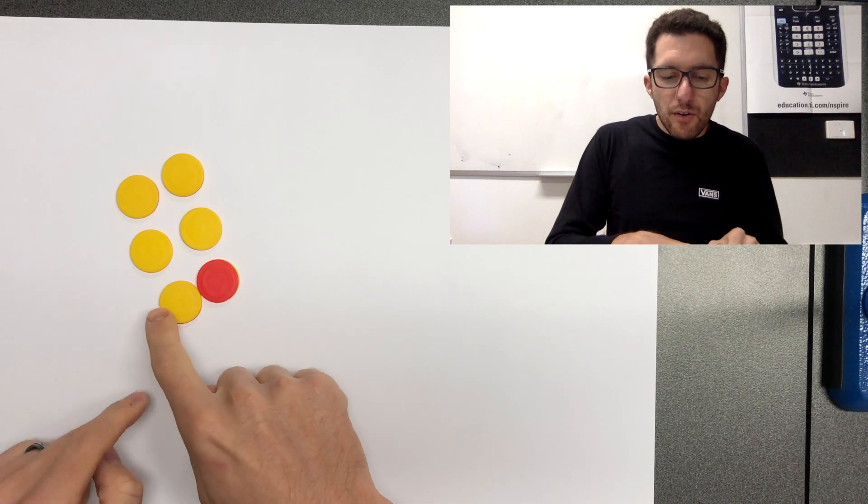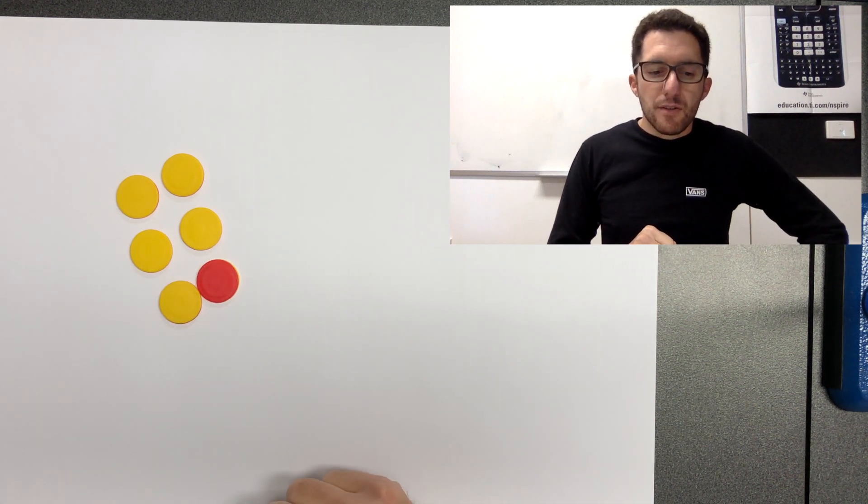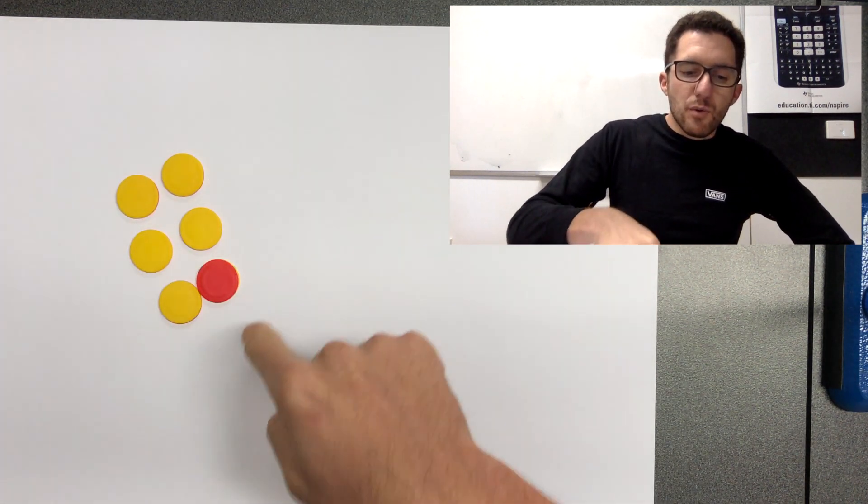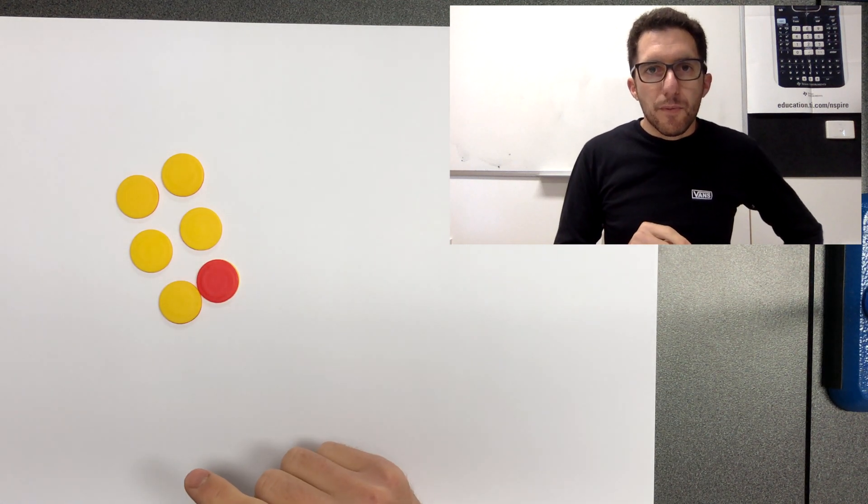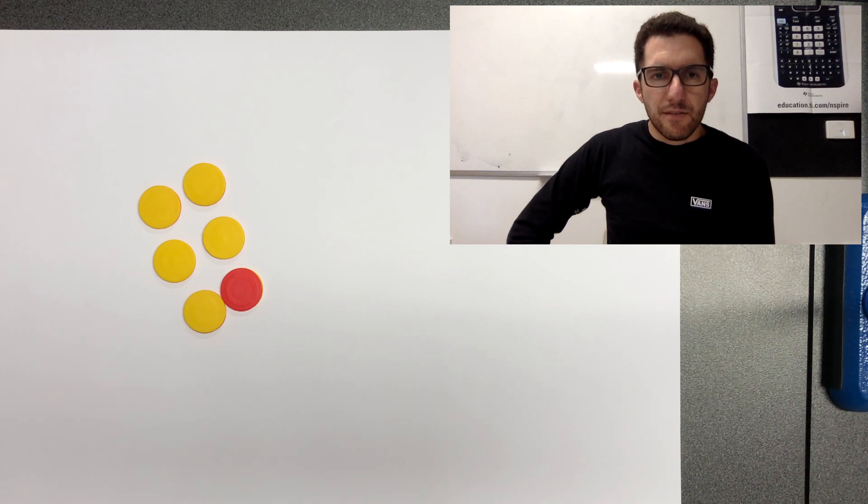And then this extra yellow one is cancelled out by the red tile. So even though we have an extra yellow tile, because it's paired with a red, all of that is worth zero. So the value of all of these tiles is four. Does that make sense? Maybe just stop the video to think about that again if you need to.